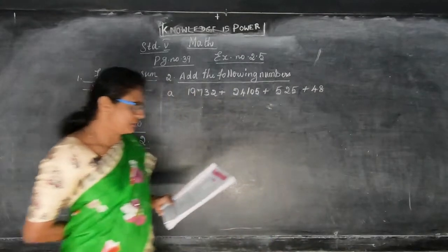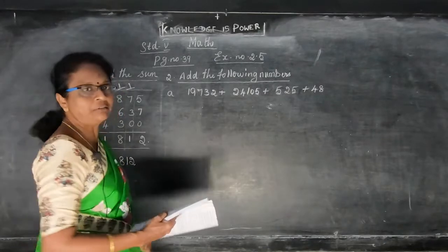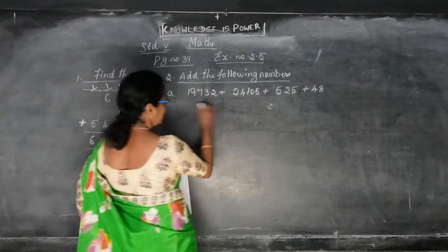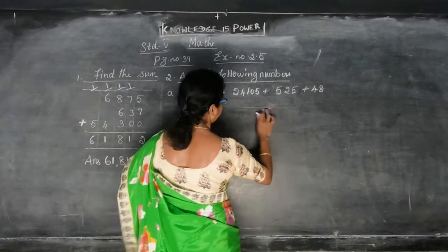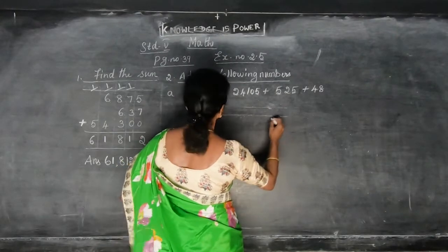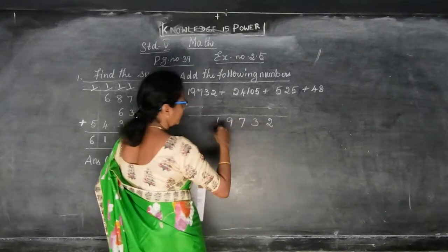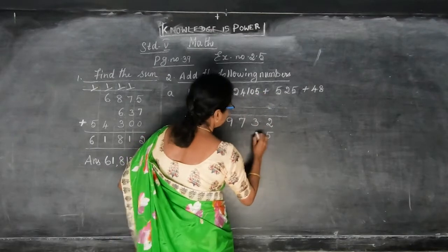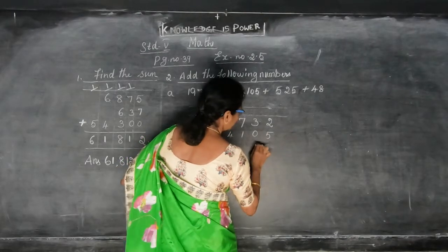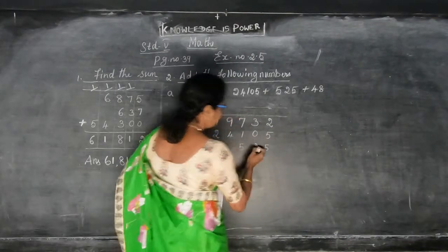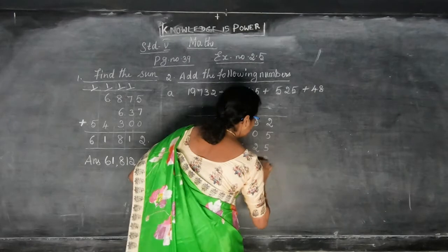This is the number they are given: 19,732. You have to arrange the numbers according to their digits, so give some space or put a line. So: 2, 3, 7, 9 and 1. After this: 5, 0, 1, 4 and 2. And after this: 5, 2 and 5. If it is a 3-digit number, just leave those places — don't put anything after that. Then the 2-digit number: 8 and 4. Always start writing from the 1s digit.